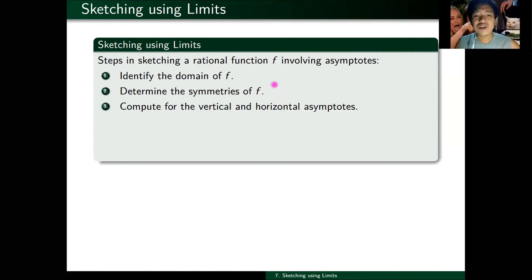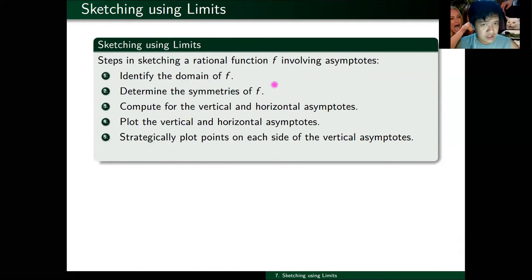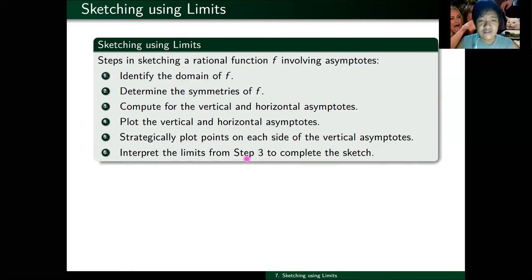Third, compute all vertical and horizontal asymptotes. After knowing your asymptotes, you should plot them in your Cartesian plane. After plotting them, choose at least one point on each side of your vertical asymptote — every side of the vertical asymptote should have a plotted point to guide your function. And lastly, interpret the limits from step 3 to complete your sketch. This may not give you the exact graph, but it gives you a sketch of what your function looks like.